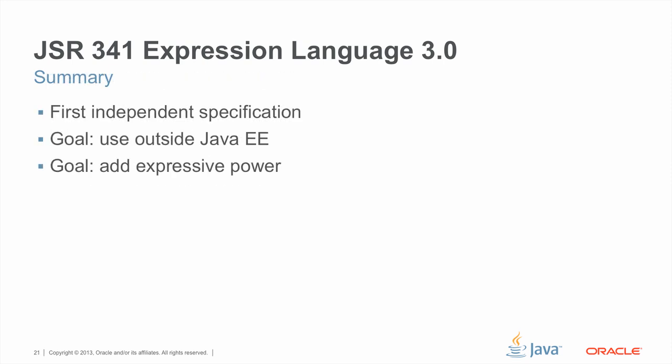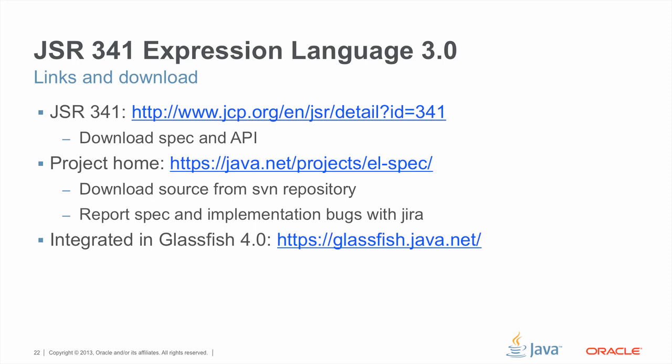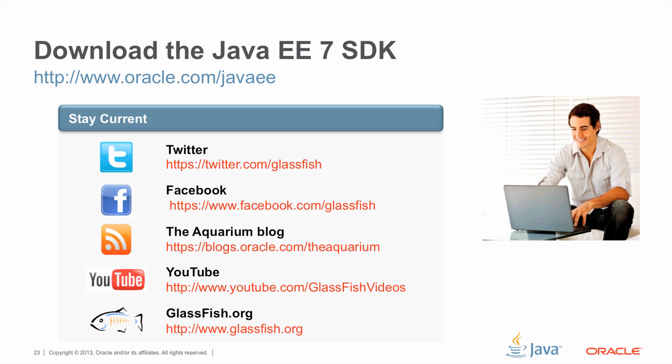In summary, JSR 341 is the first independent specification for expression language. It can be used in a standalone environment outside of Java EE, which is one of the goals of this specification. The other goal is to add more power and expressiveness to the language, and for that we have included a lot of new functions. This slide includes instructions for how to download the spec and also the source, and how to report problems with either the implementations. Thank you very much for listening to this screencast for Expression Language 3.0, JSR 341.